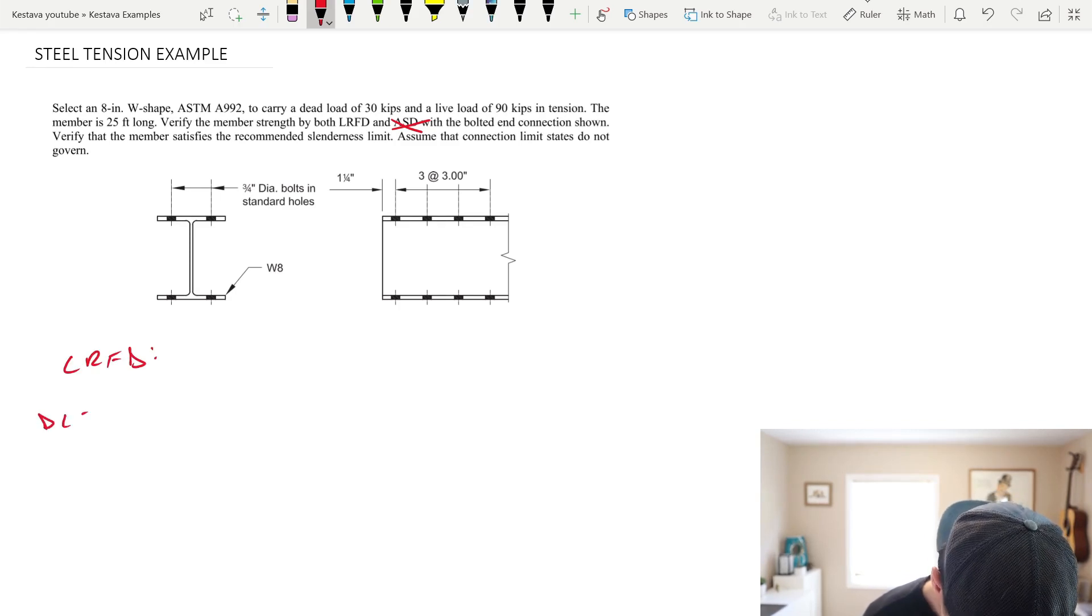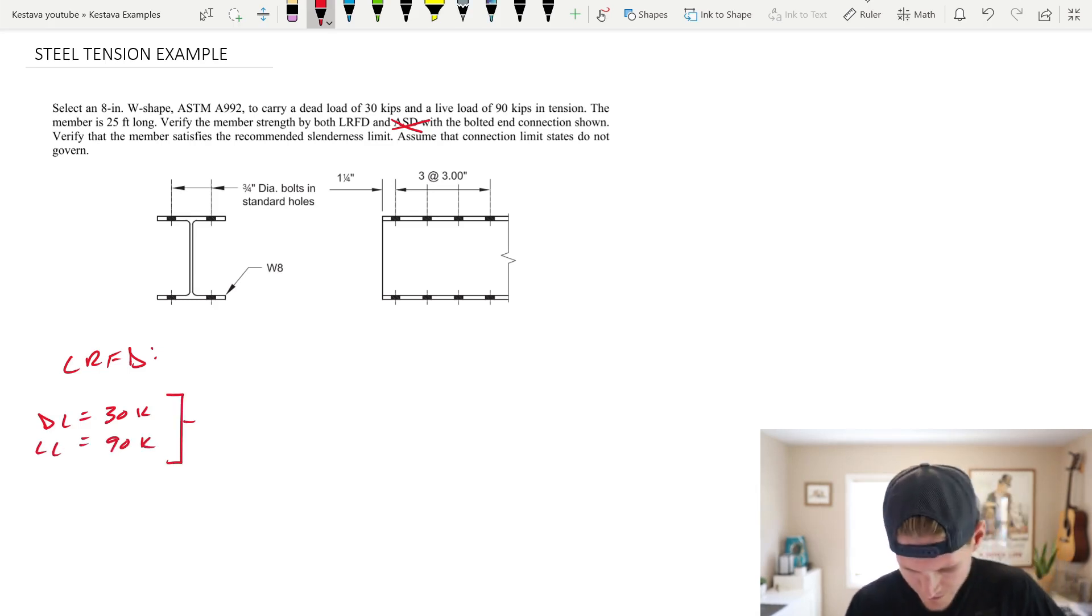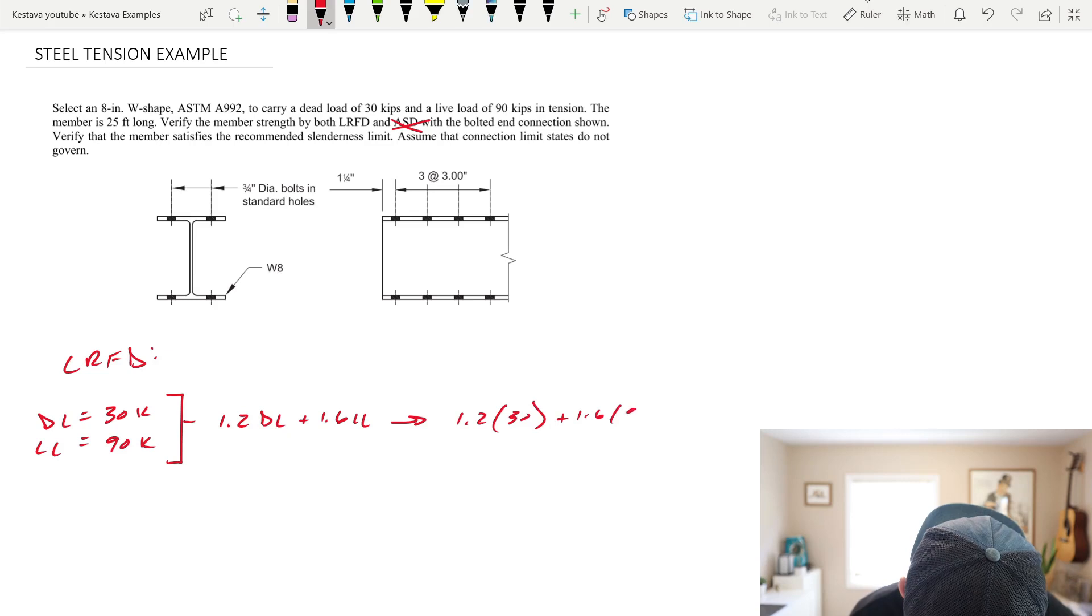We have a dead load equaling 30 kips and a live load equaling 90 kips. Without getting too far into all the different combinations per chapter 2 of ASCE 7-16, I know off the bat that I believe 1.2 dead load plus 1.6 live load is going to be our controlling case. That's what it is most of the time but if you have something weird always go back and check to make sure that you are using the governing load combination. What does that get us? Plug it in 1.2 times 30 plus 1.6 of 90 gets us 180 kips. That is our demand.